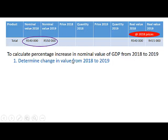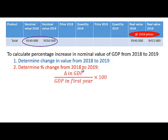First, determine the change in value from 2018 to 2019, and then determine the percentage change from 2018 to 2019 using this formula: the change in GDP divided by the GDP in the first year (2018), times 100.